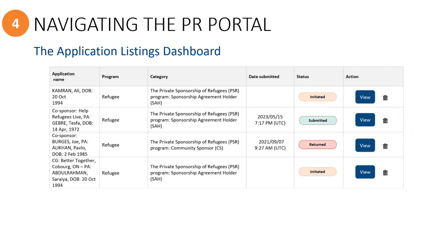Application submissions can only be done by the primary sponsor. However, invited group members will see a green Submitted bar appear in the Status column, and you will receive an automated email notification from the PR Portal with the local date and time of submission. However, in the Dashboard Listing, the Application Date Submitted will show a different timestamp than your local time zone because it is displayed as universal time.